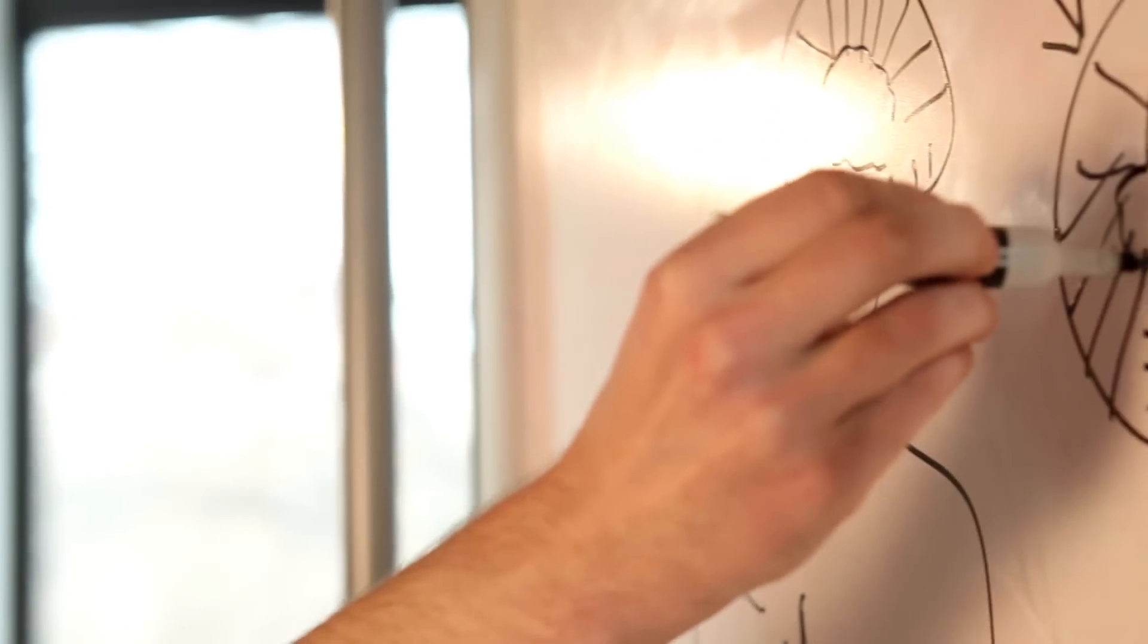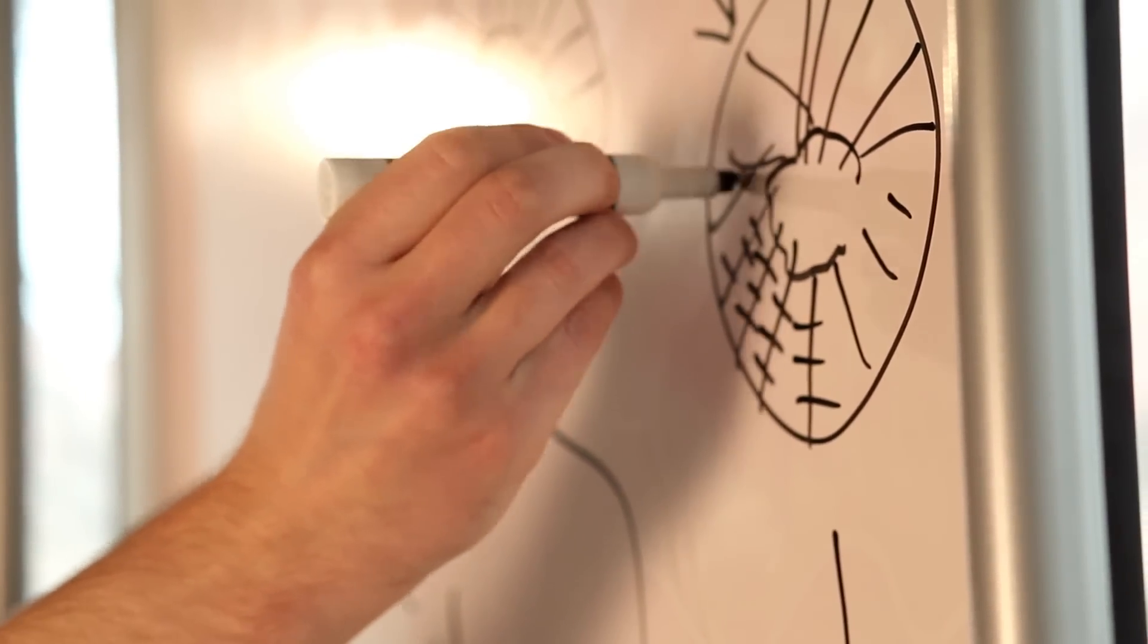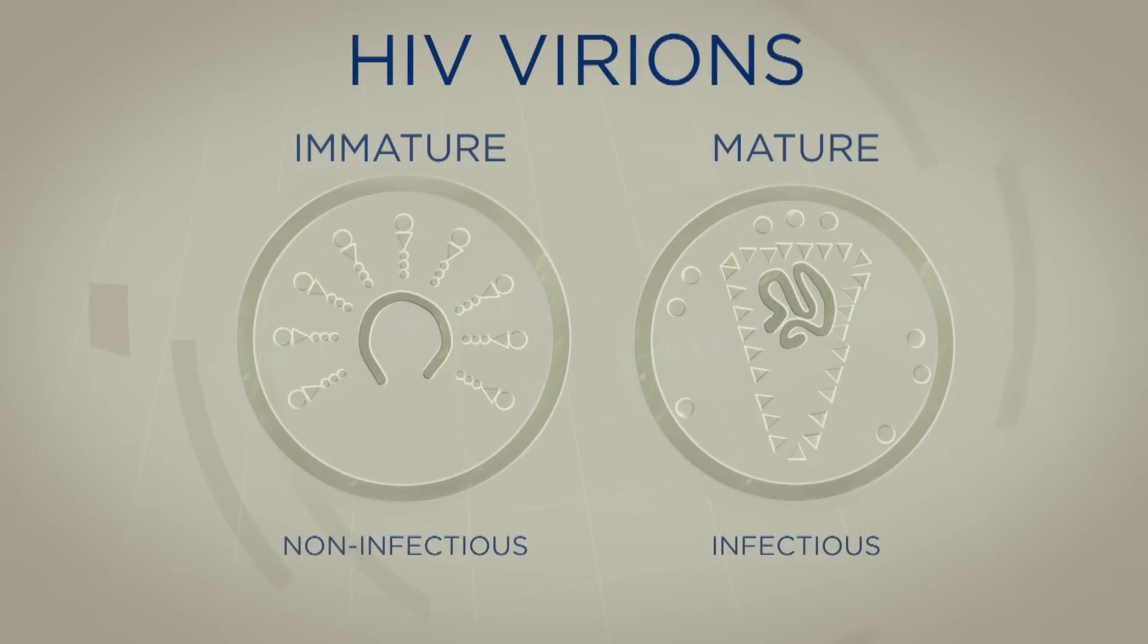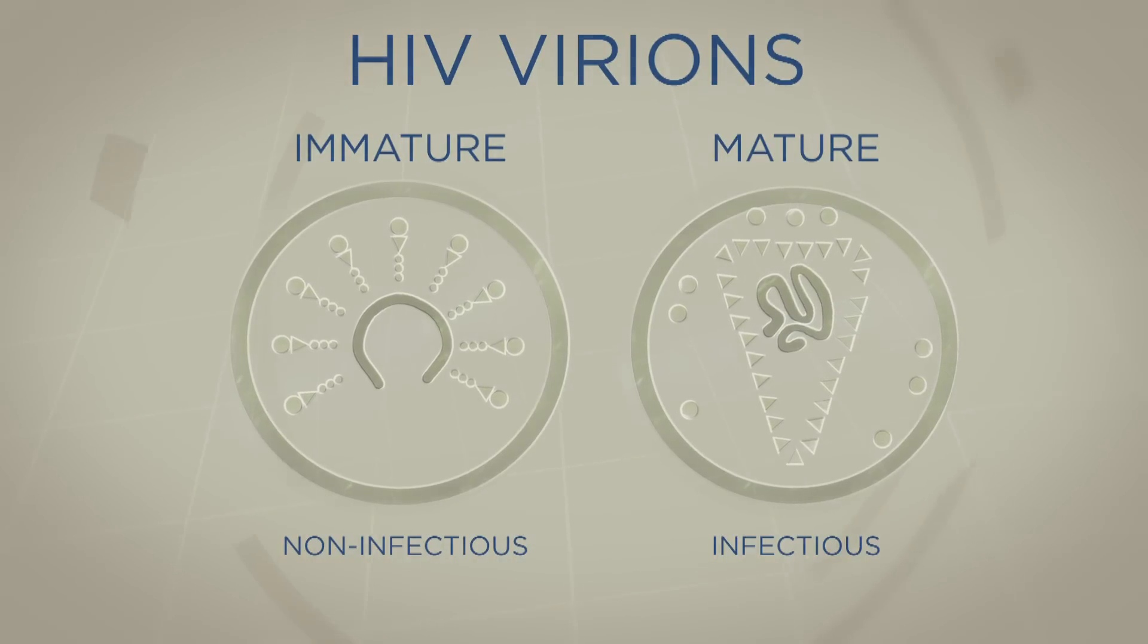When it's first released, this spherical shape is not actually infectious and we refer to this spherical construction as a virion. The immature HIV virions are spherical and the mature HIV virions are also spherical. It's what goes on inside the virion that's important.